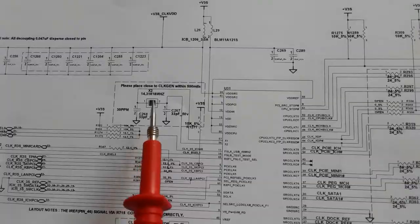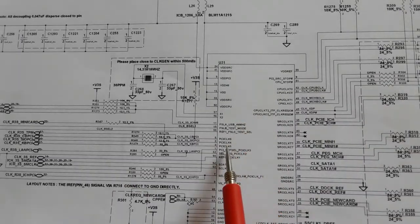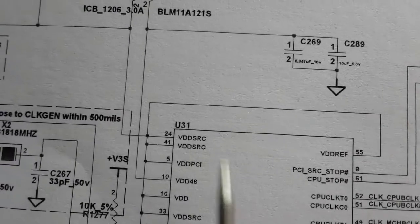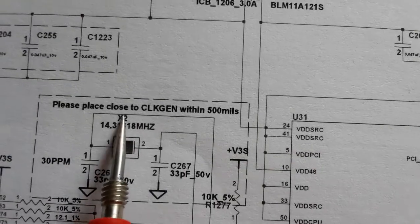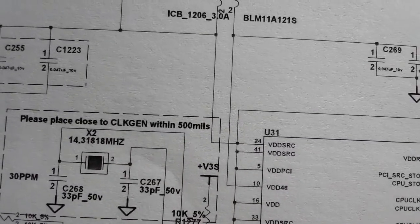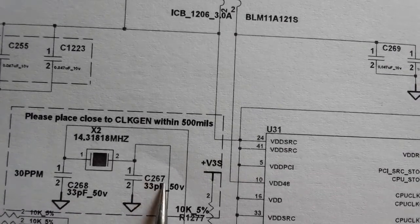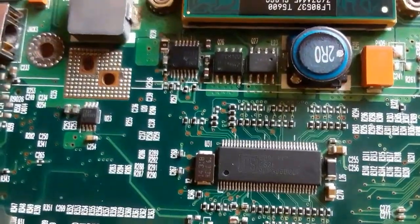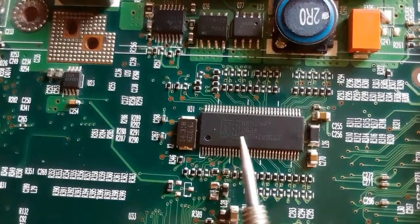The crystal is always connected to two capacitors. This is the clock generator IC — this clock generator is always near the CPU. Its reference is U-31, and the crystal is X2, with two capacitors: C268 and C267. We're going to see these references in the motherboard.